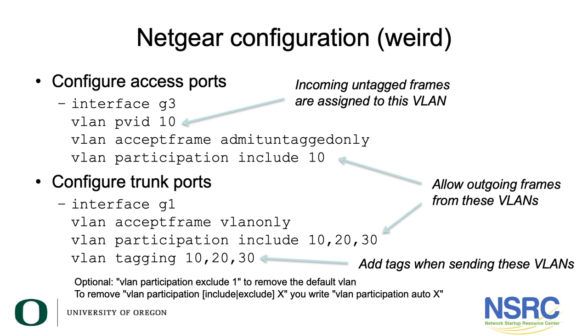This Netgear approach is very different, and it also does not disable VLAN 1 by default — if you want to disable VLAN 1 you must say 'vlan no participation' inside VLAN 1, as shown in the note. The moral of the story is: as long as your switch supports 802.1q tagging, it will be able to exchange VLANs with other vendors. You just have to read your switch's documentation to learn how to create an access port and a trunk port, and then the configuration will match everything else.